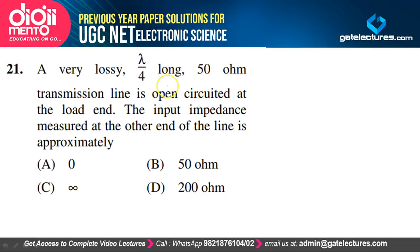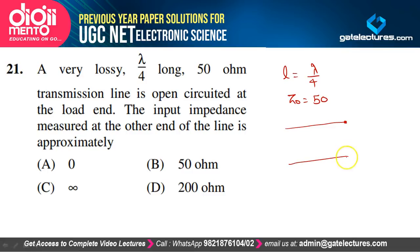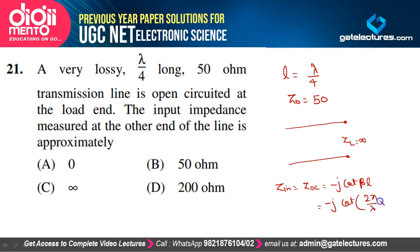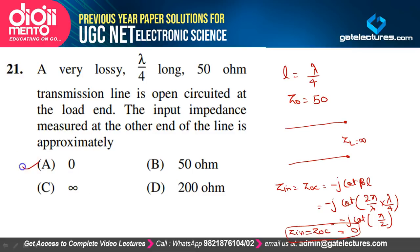A lossy λ/4 long, 50 Ω transmission line open-circuited at the load end (ZL = ∞): Zin(open) = −j·Z₀·cot(βL) = −j·50·cot(2π/λ × λ/4) = −j·50·cot(π/2) = 0. The input impedance is 0. Option A is correct.